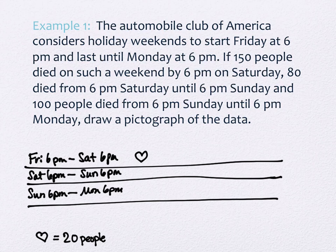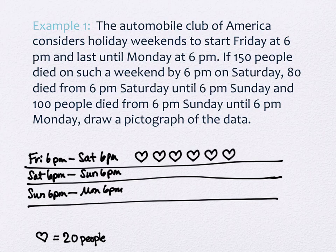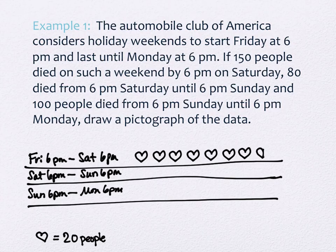I'll place 8 hearts and then erase half of one — giving us 7.5 hearts for the first row representing 150 people. For Saturday 6 p.m. to Sunday 6 p.m., 80 people died. If 20 people equals one heart, that's 4 hearts. They need to be approximately the same size and line up underneath the ones above.